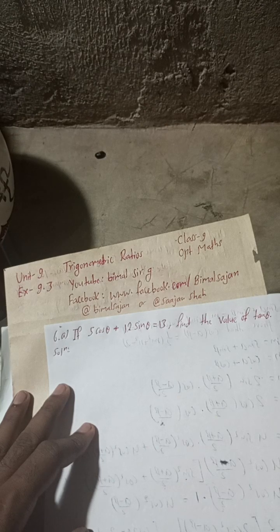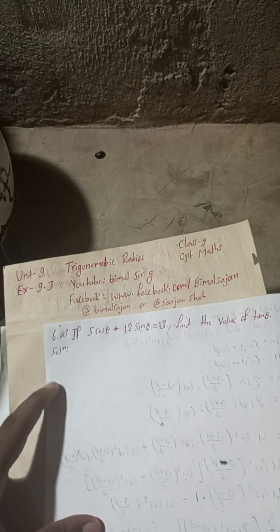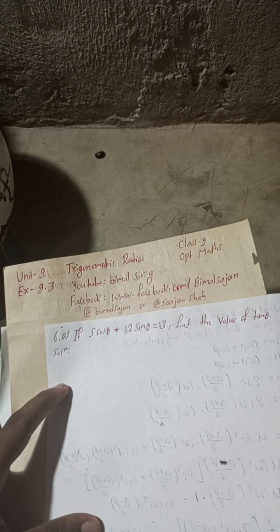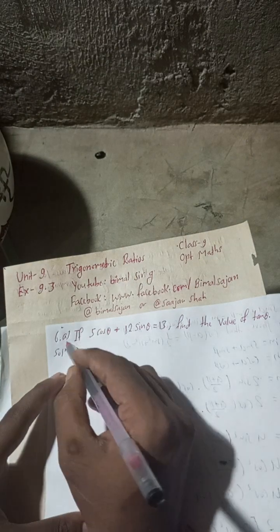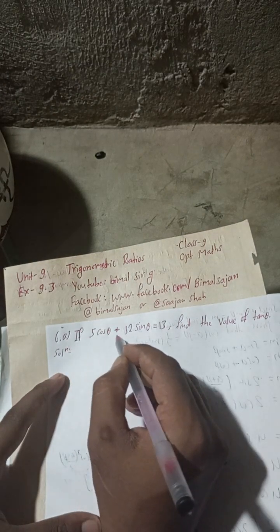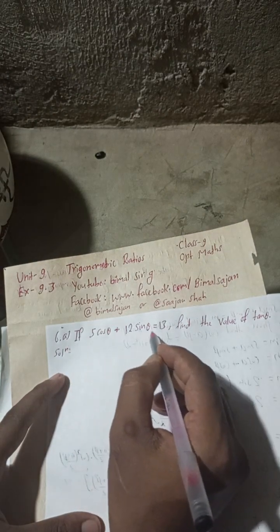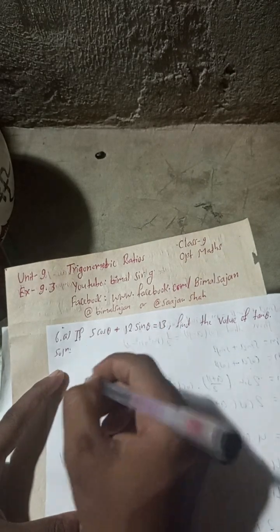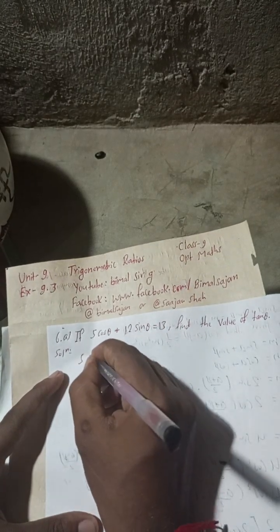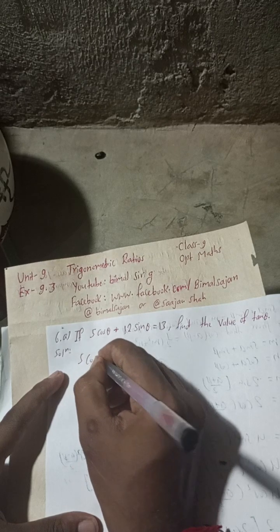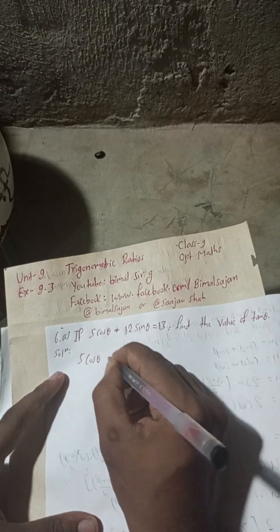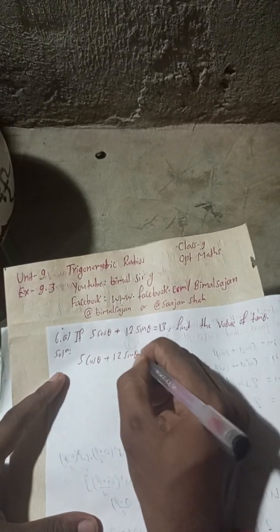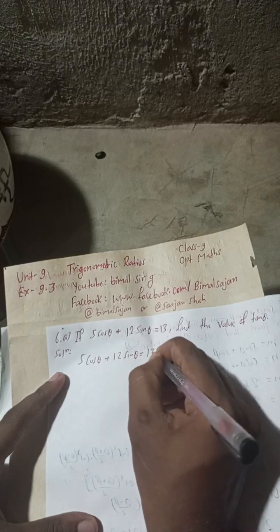Keep patience — one by one I will upload all solutions. Let's begin the solution now. Question 6a: if 5cosθ + 12sinθ = 13, find the value of tanθ. So here it is given that 5cosθ + 12sinθ = 13.